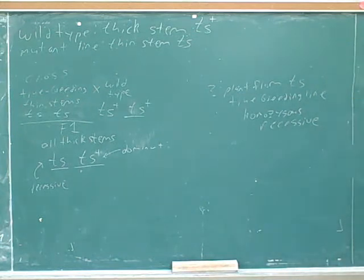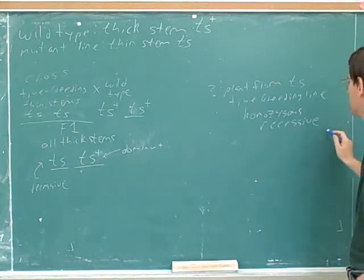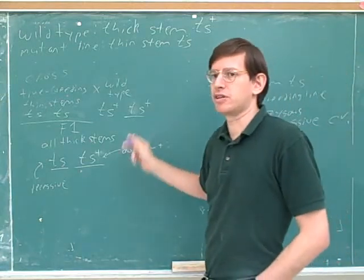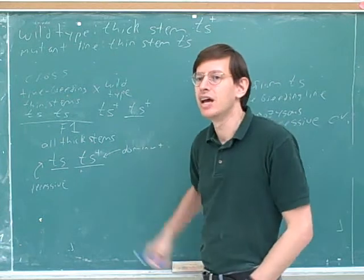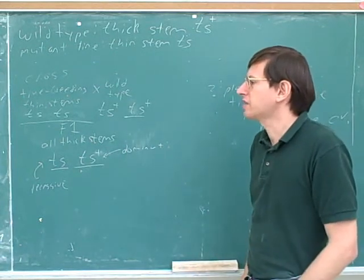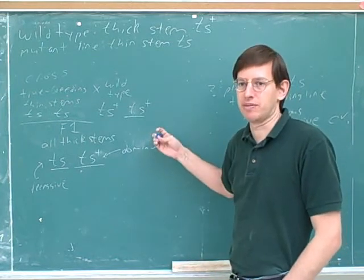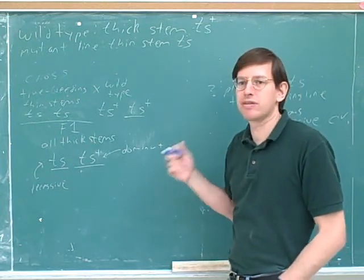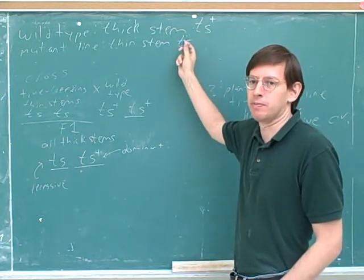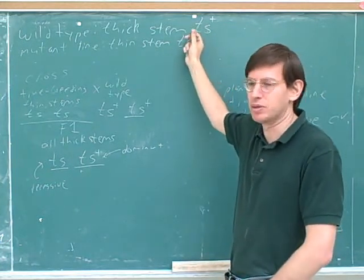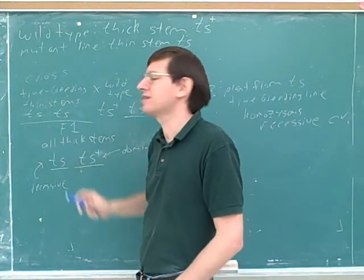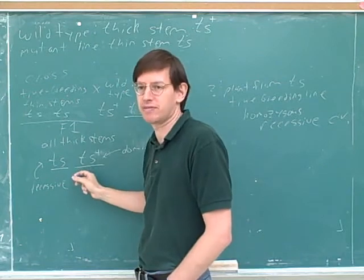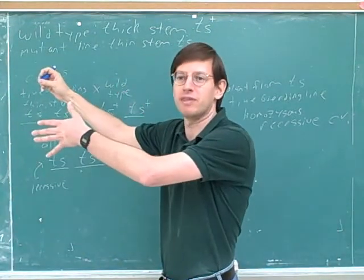Is that one of the choices? Yes — it is choice C: homozygous recessive for the TS allele. This is a really good question to go through; this type of question is likely to appear on an exam and these are not easy. The key techniques I used: first, I wrote down all the information I was given and organized it as best I could. Then I tried to figure out one little thing at a time — figuring out each symbol, each allele — until I had enough information to answer the question. We can't just expect to jump to the right answer in one fell swoop.